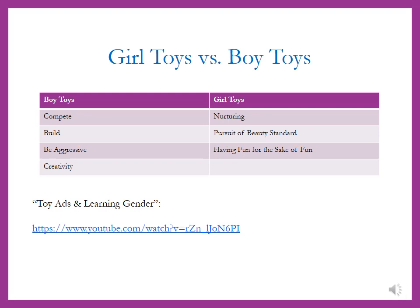As I made my way over to the boy section, I saw really neat Lego sets and transformers and cool scientific experiments that you just didn't see over in the girl section. There's a link on this page to a YouTube video called Toy Ads and Learning Gender, and it's a really good analysis of the way in which toys and their advertisements target either boys or girls and teach them what it means to be masculine and what it means to be feminine. The boy toys generally involve competing, building, producing, and often encourage aggression. The girl toys focus on nurturing, the pursuit of beauty standards with hair brushing and jewelry, or just having fun for fun's sake — training blocks for a creative adult life that the girl toys are really missing.